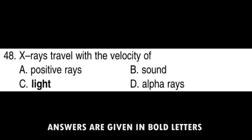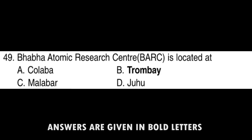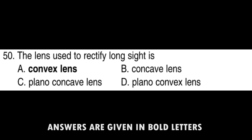The nuclear fuel in the sun is Hydrogen. X-rays travel with the velocity of light. Bhabha Atomic Research Center is located at Trombay. The lens used to rectify long-sightedness is Convex.